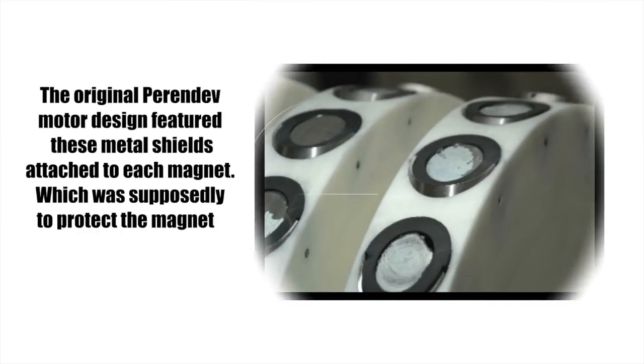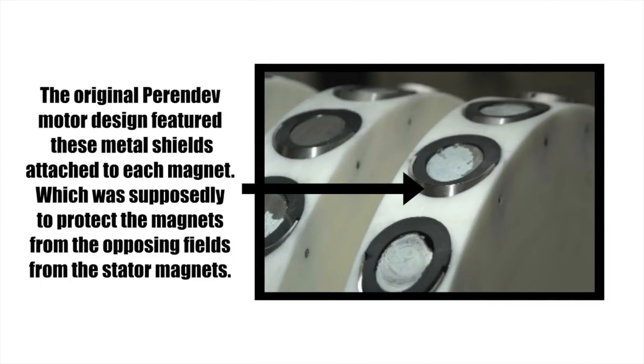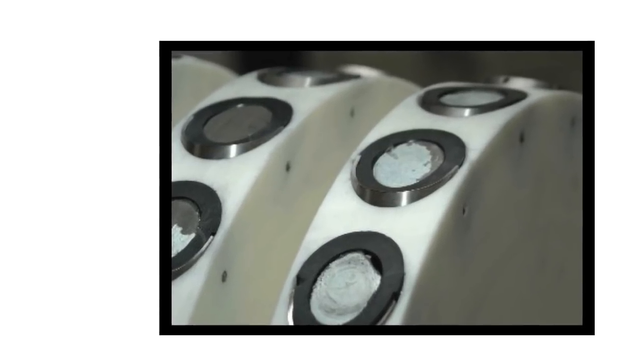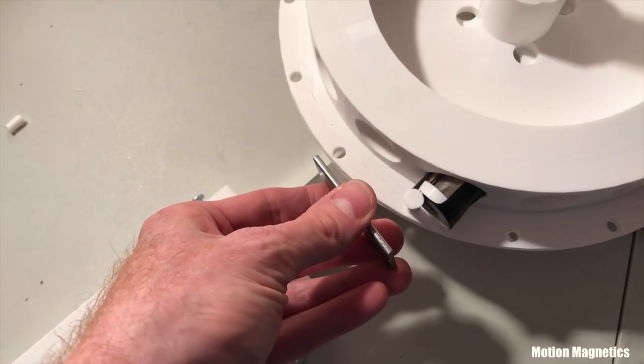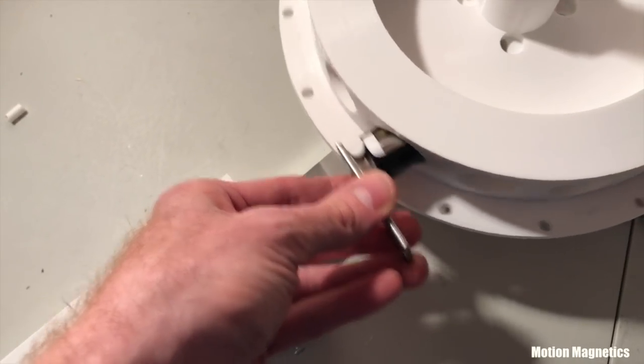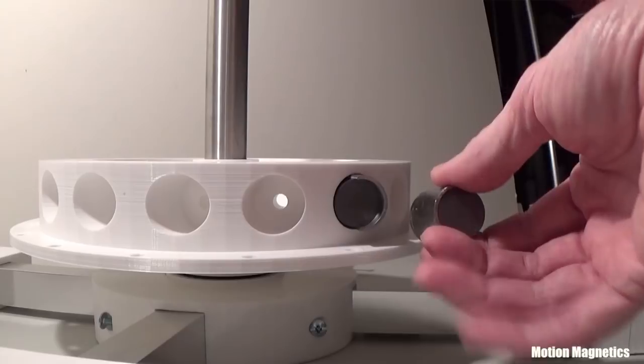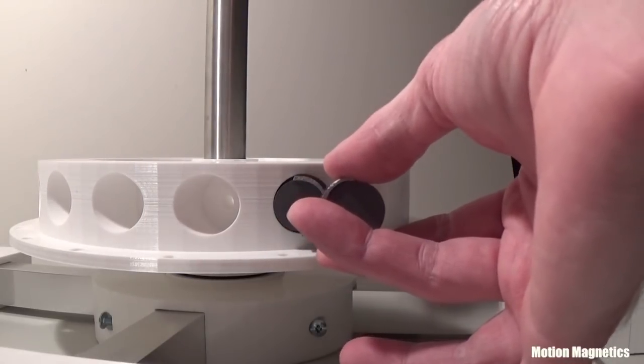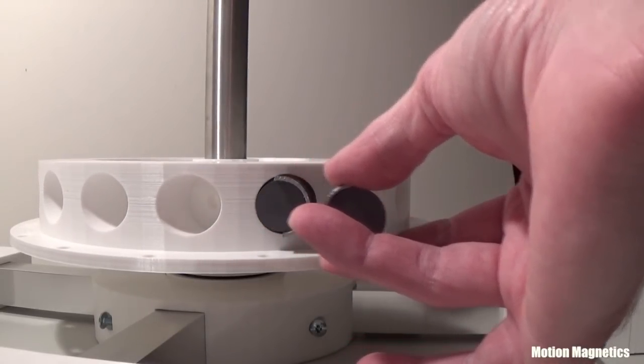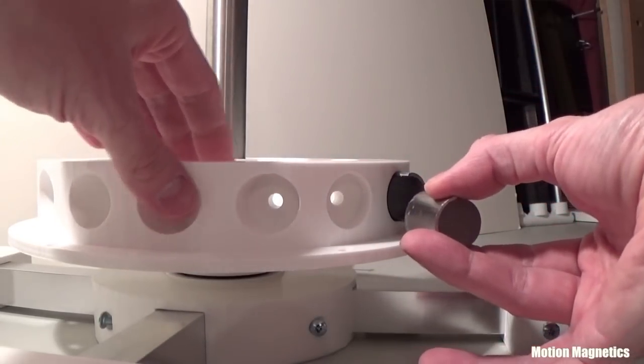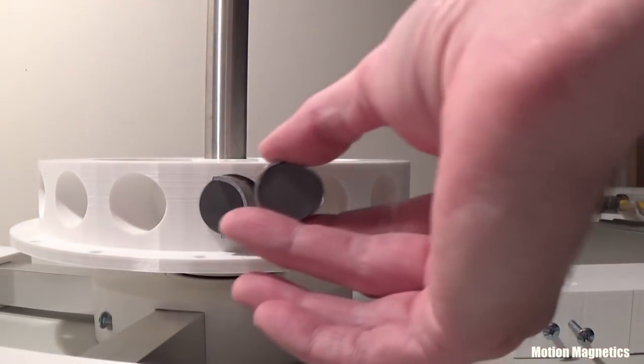The original Perindiv motor design featured these metal shields attached to each magnet, which was supposedly to protect the magnets from the opposing fields from the stator magnets. I believe they may have held a dual purpose. One, they act as a ramp to attract the rotor magnets into the correct position with the stator magnets, and two, they shield the entry point. By using these shields on one side of the magnets, they are no longer repelled as they approach each other, so using several of them in unison would allow you to use attraction and repulsion in conjunction.